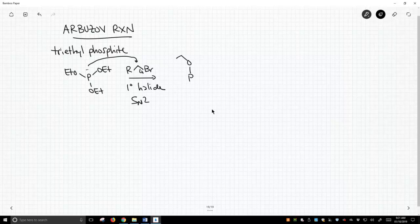I'm going to draw one of these ethyl particles off in its full structure. The phosphorus has a positive charge because it lost its lone pair to make a sigma bond.